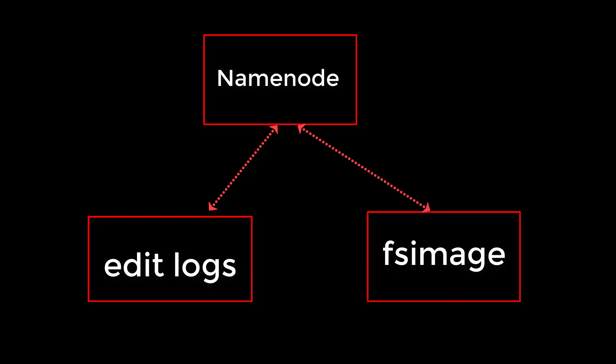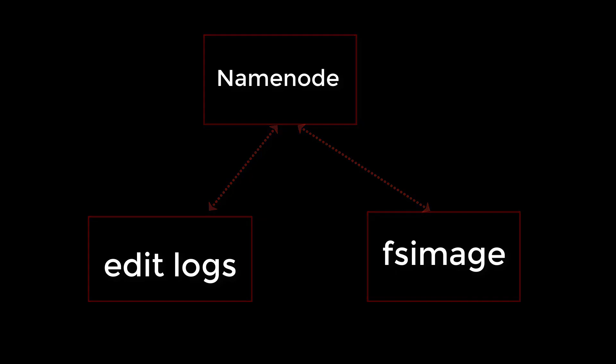To overcome that, we have an option called checkpointing. That is nothing but taking the latest FSimage, at which point we will have a very small-sized edit file. This is called a checkpoint, and the role of the secondary name node is to help perform this checkpointing.